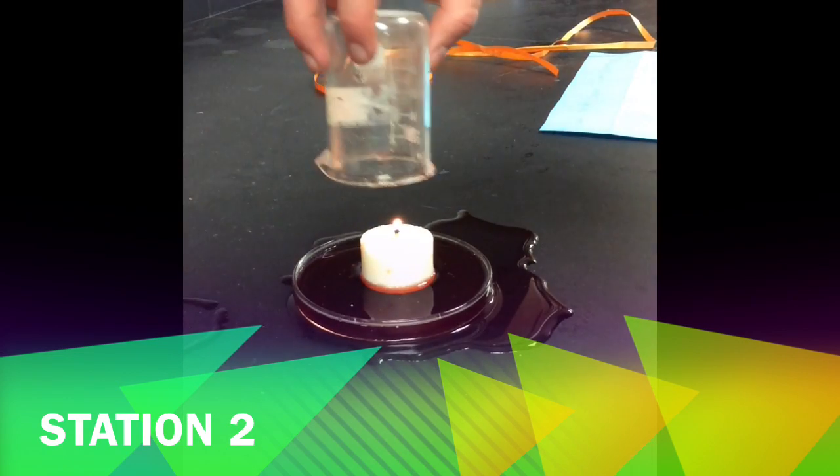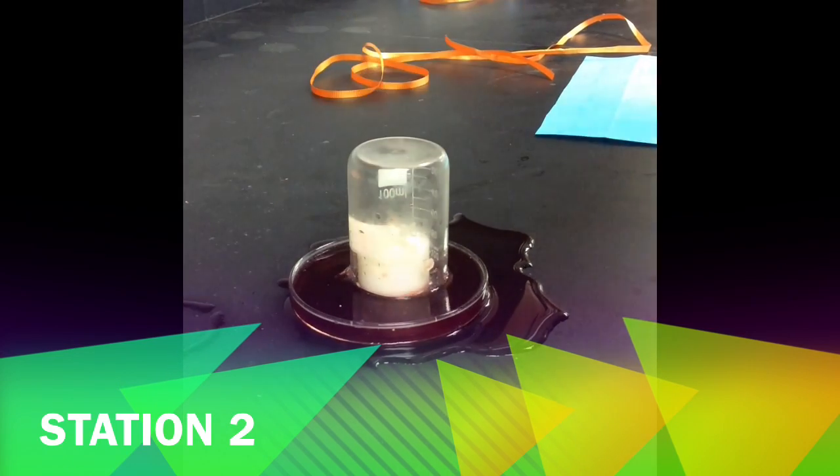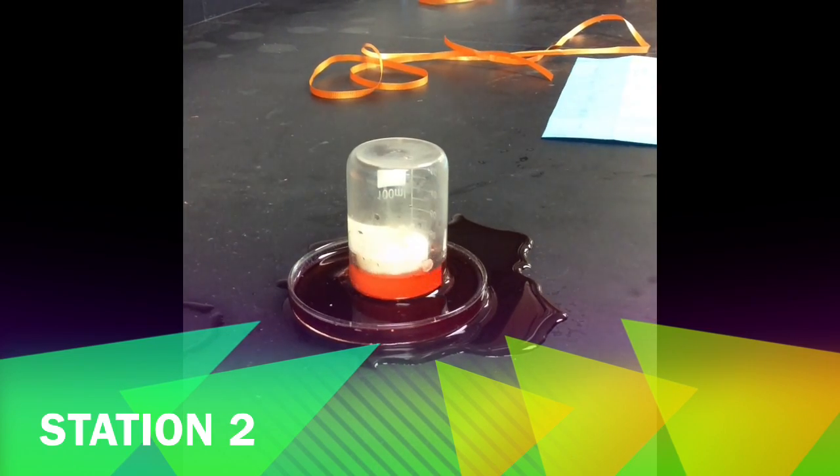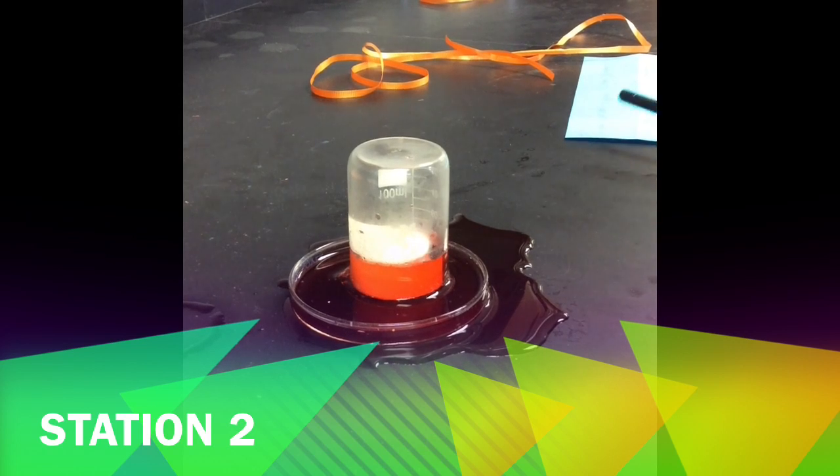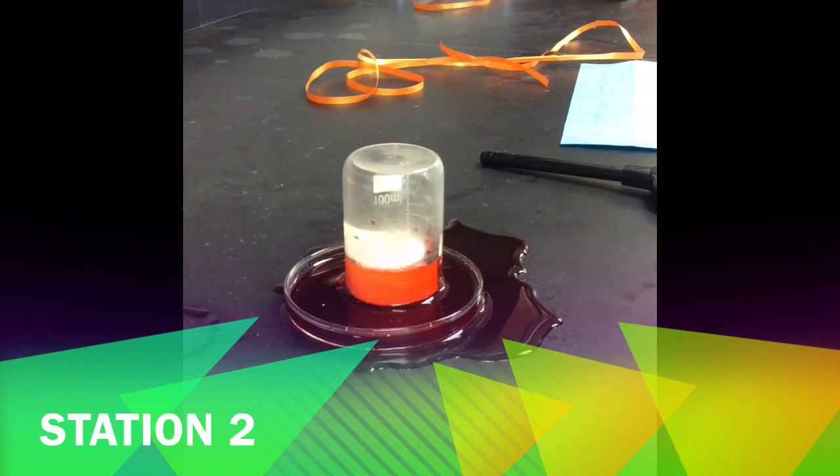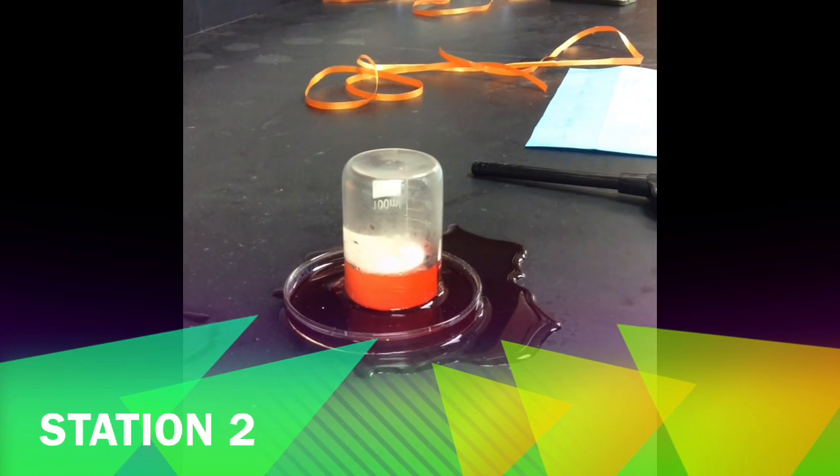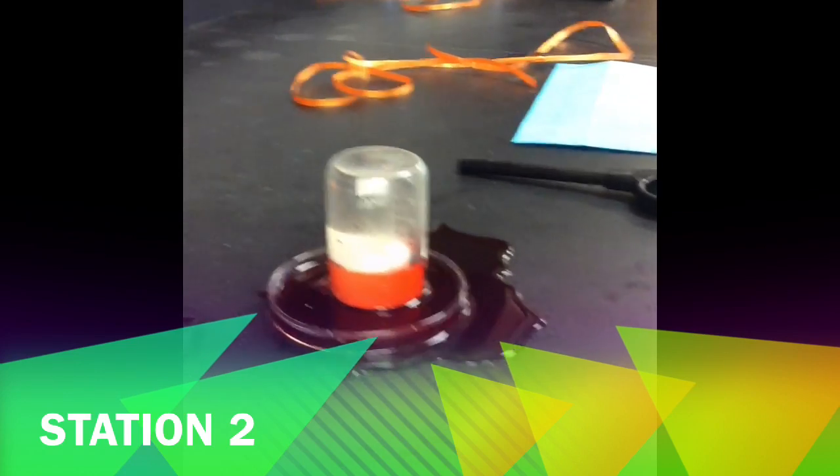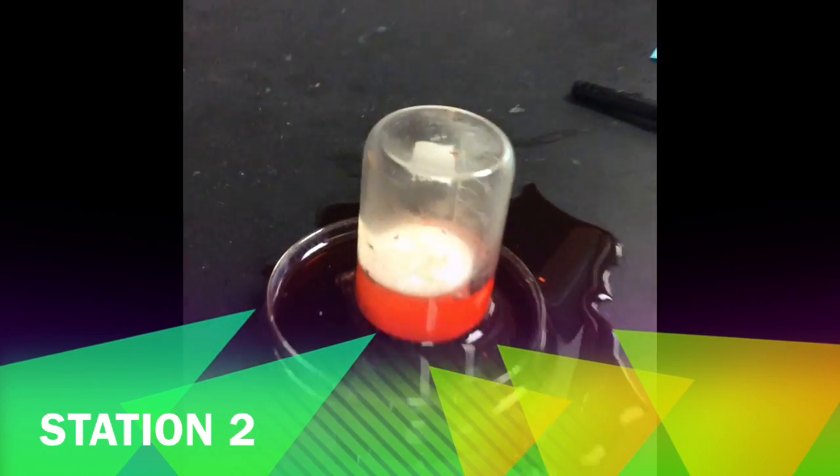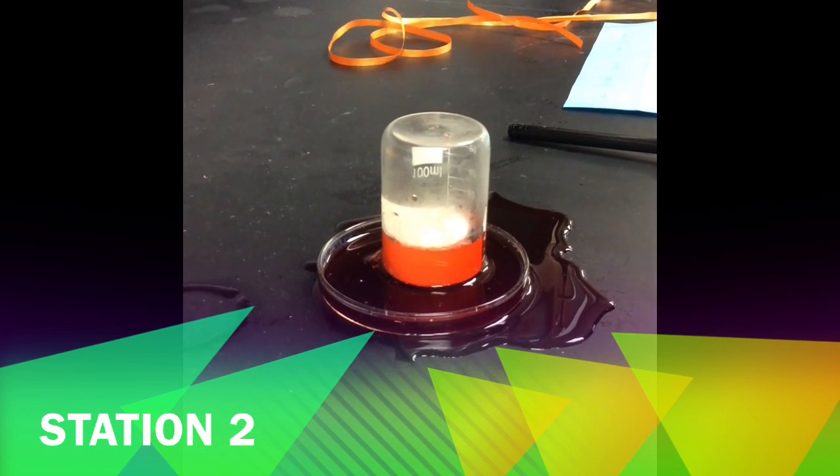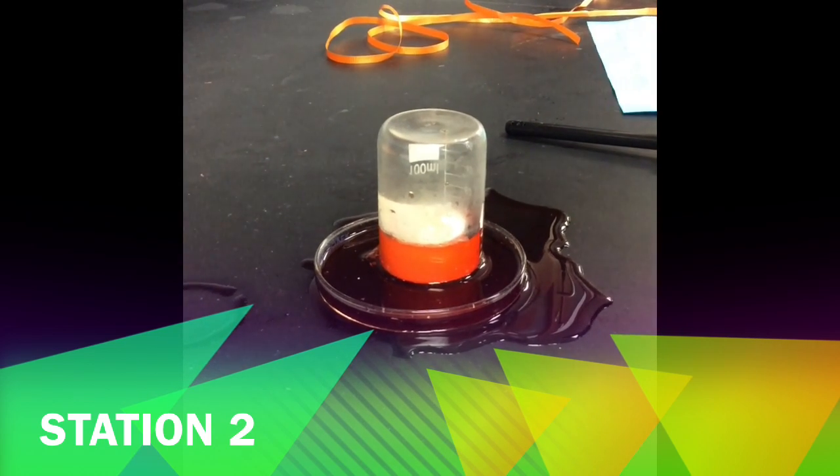Now we're gonna take the beaker and place it on top of the candle. You should notice that we've got some dyed red water up in our beaker and the candle has completely extinguished itself. Think about what happened to the volume of air inside the beaker when the candle went out.